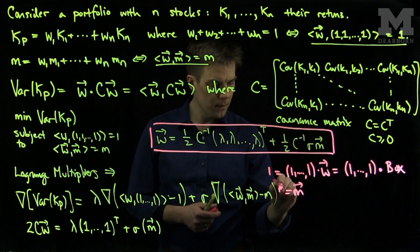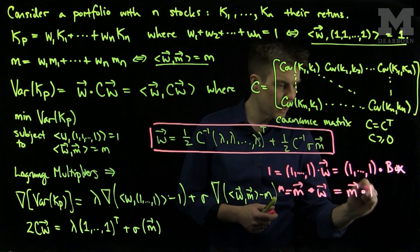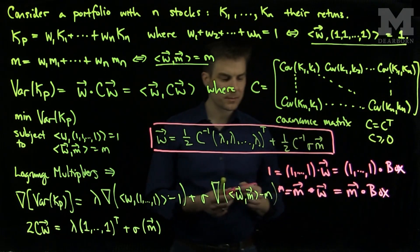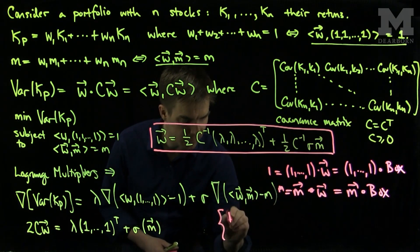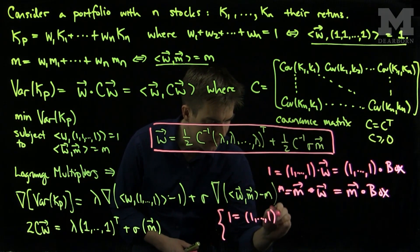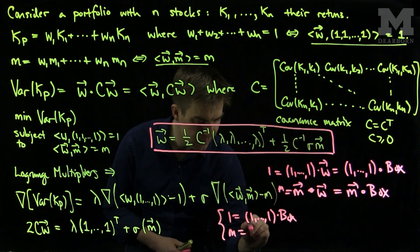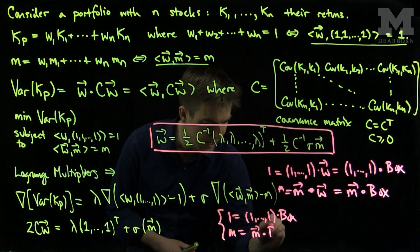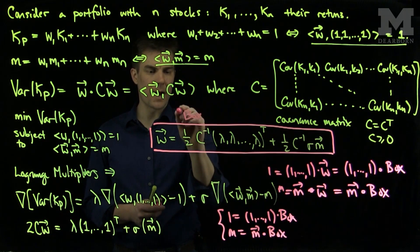And so what we have here is we have two equations, two unknowns. We have 1 is equal to the vector of ones dot the box. And m is the vector m dot the boxed equation, where this is my box.